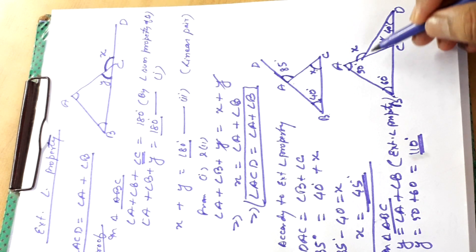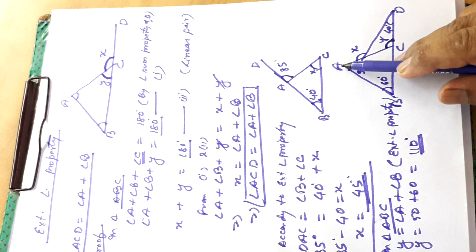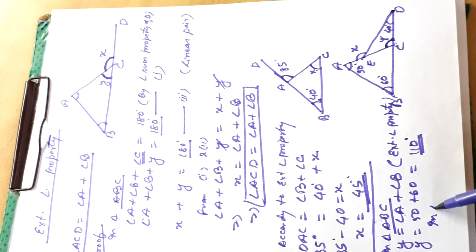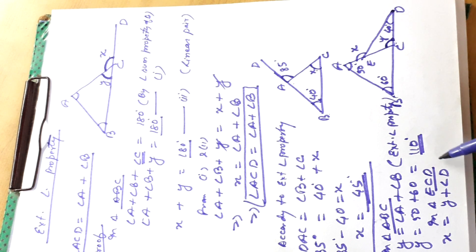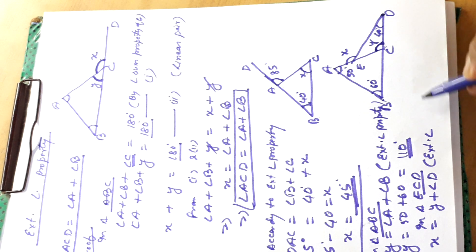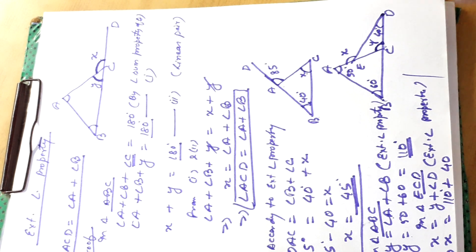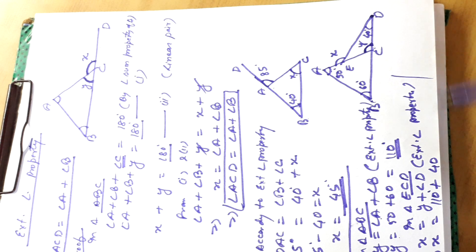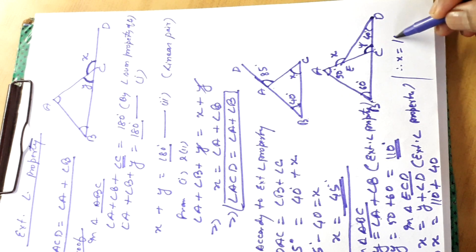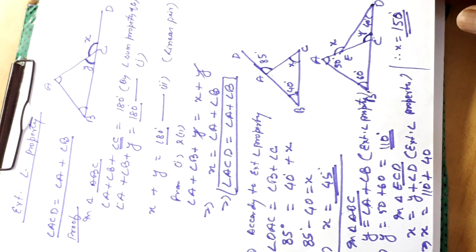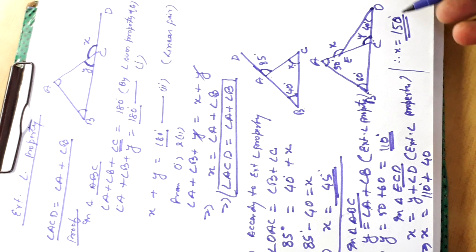Now we will find x. Suppose there is a point E. Angle AED is the exterior angle of triangle ECD. Then in triangle ECD, x is equal to y plus angle D, by the exterior angle property. We have found y to be 110 degrees, and angle D is 40 degrees. So x is equal to 110 plus 40, therefore x is equal to 150 degrees. This is the answer. In this way we can solve many problems by using the exterior angle property of a triangle.